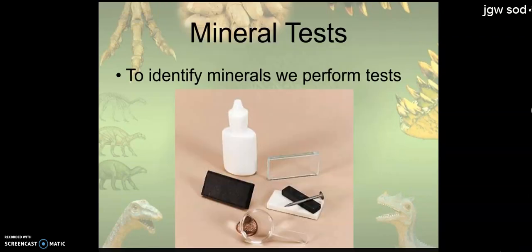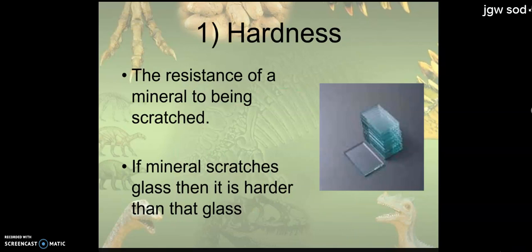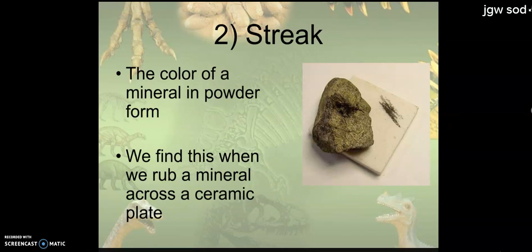Like for example, hardness. So if you'll notice here, I have a glass streak plate. And this streak plate that we use, we could scratch a mineral on it. If it could scratch the glass, I know it's harder than the glass. If it can't, I know it's softer than the glass. It gives me a good idea of how hard it is.